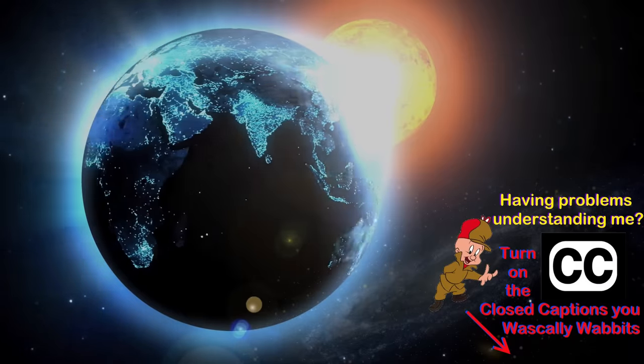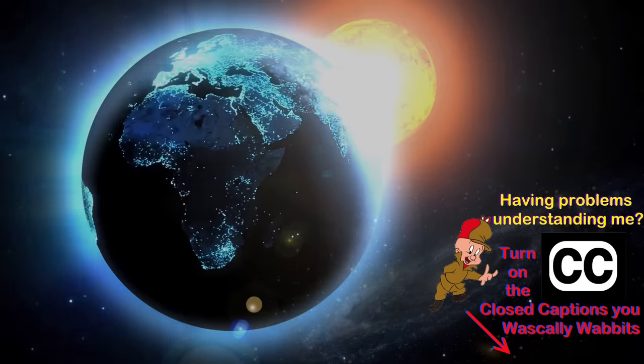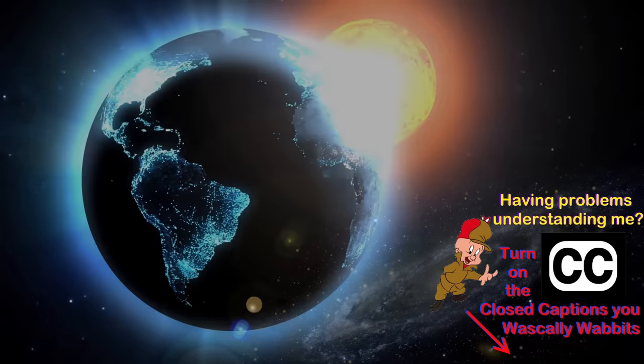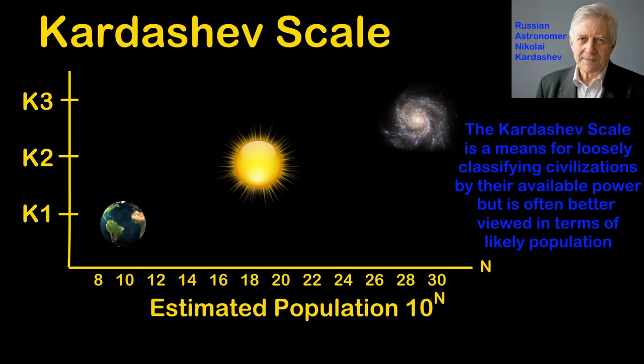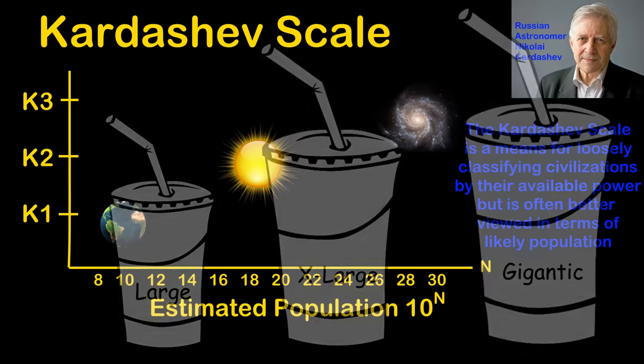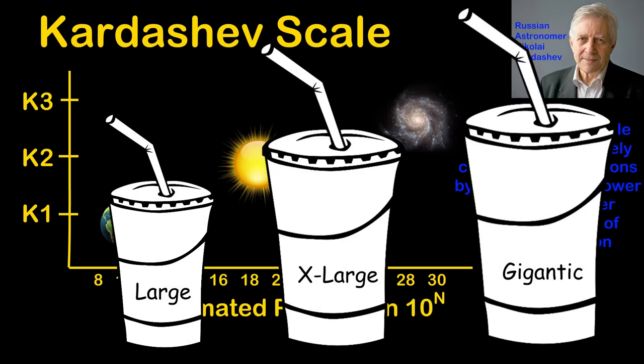We might as well start with the basics. Back in 1964, astronomer Nikolai Kardashev created a clever scale for identifying the size of civilizations. Unfortunately, it only has three official steps: planetary, solar, and galactic. This is kind of like having three sizes of drinks where you've got large, extra-large, and gigantic.